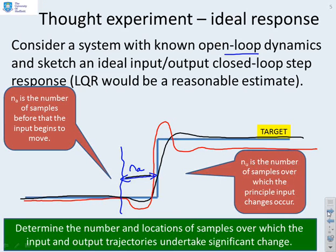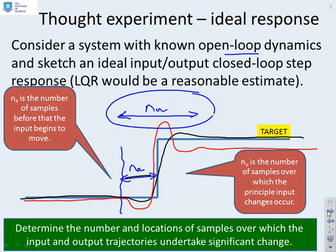So if I basically draw an arrow like that, then NA is roughly how long before the target do I need the input to move in order to get close to my optimal response. NA is going to be the number of samples over which I have significant input changes. This is just a thought experiment to get you to think what you can do in order to get a well-posed optimization.